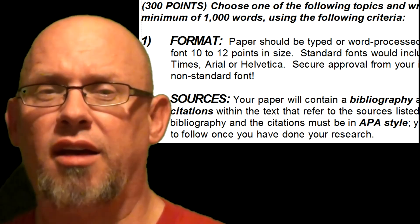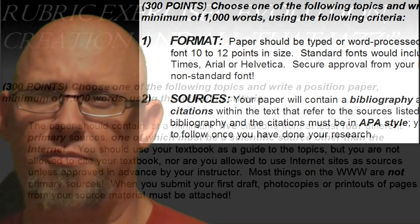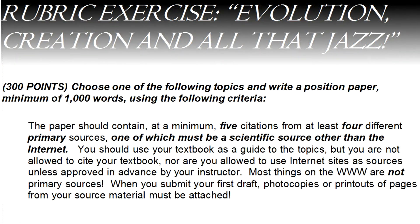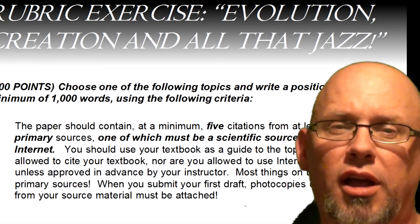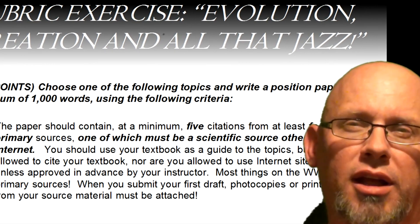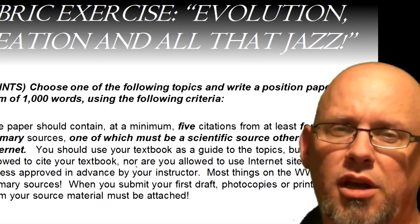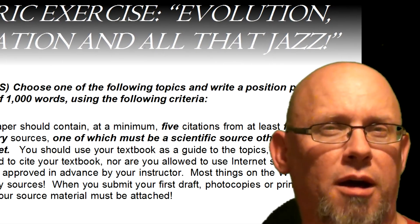Students will be expected to have sources and an APA-style bibliography, and also citations within the body of the text done APA-style. Students have previously been taught how to do this, and further instruction will be provided as needed. Five citations at a minimum will be required from four different sources, one of which must be a scientific source other than the Internet — a book or a magazine. Since the Internet does not usually consist of primary sources, Internet sources must be approved, and hard copies will typically include a printout of the Internet source attached.